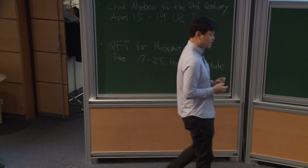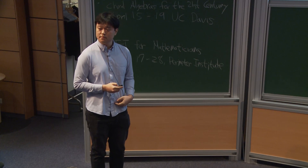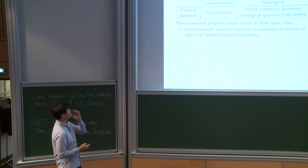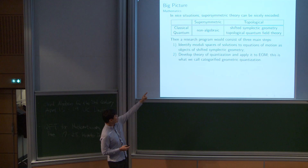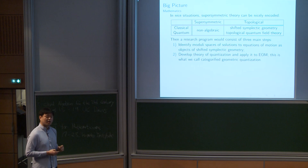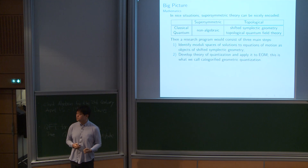One can proceed as follows. First, understand the classical field theory — try to identify the moduli space of solutions to the equations of motion (EOM). The claim is that in nice cases, including ours, this can be understood in terms of shifted symplectic geometry. Second, understand this procedure of quantization, which will be a categorified version of geometric quantization. This has been done by Chris Rogers, Pavel Safronov, Urs Schreiber, and James Rennecke.